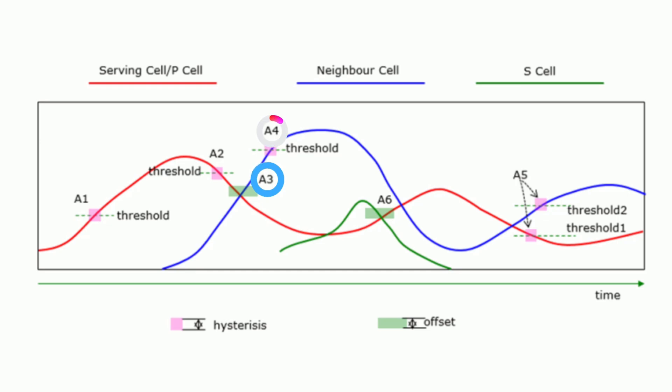Event A4. Triggered in inter-frequency handovers when a neighboring cell's signal strength or quality surpasses a predefined threshold, indicating superior conditions and a potential need for handover.